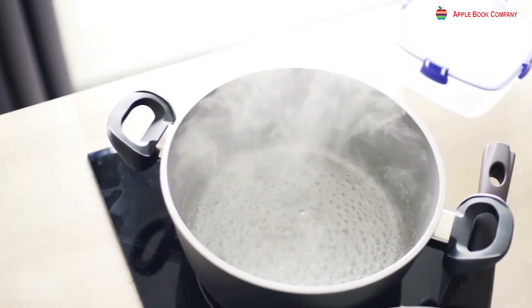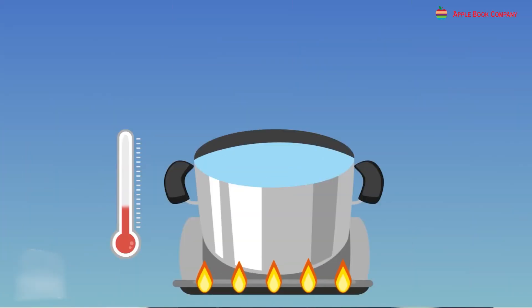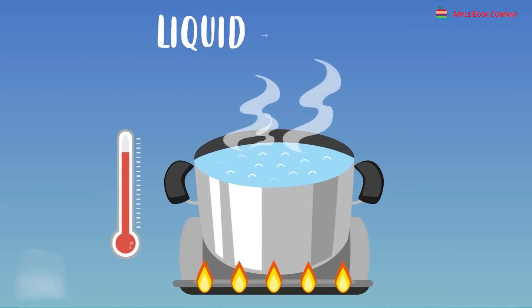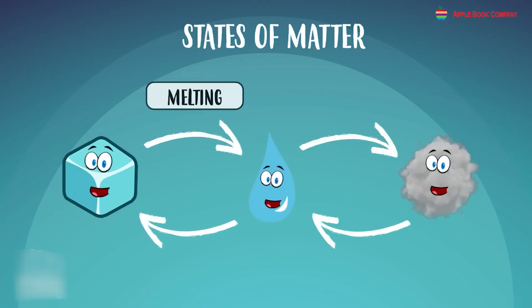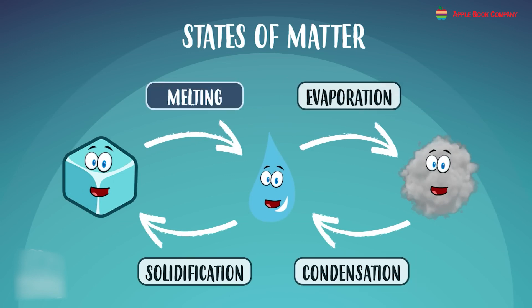Task 2. Heat some water in an open pan. It will be observed that water vapor rises from the surface of the water. Water vapor has no shape and cannot be held in an open container. Water vapor is the gaseous form of water. Thus, it is seen that water can exist in all three states of matter. A substance can exist in different states due to the differences in the arrangement of its molecules.